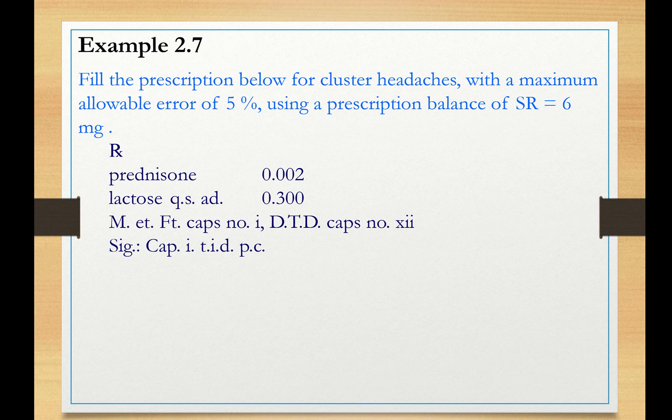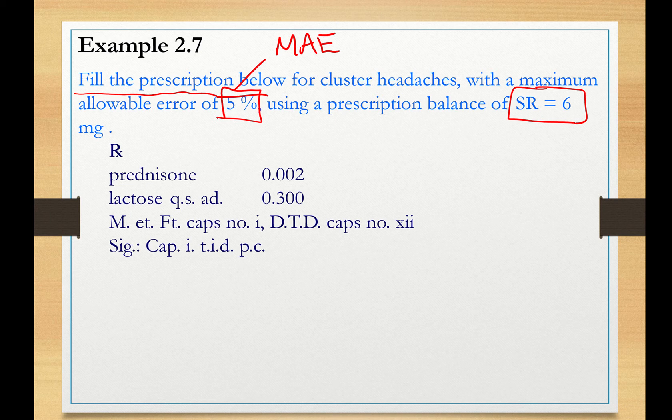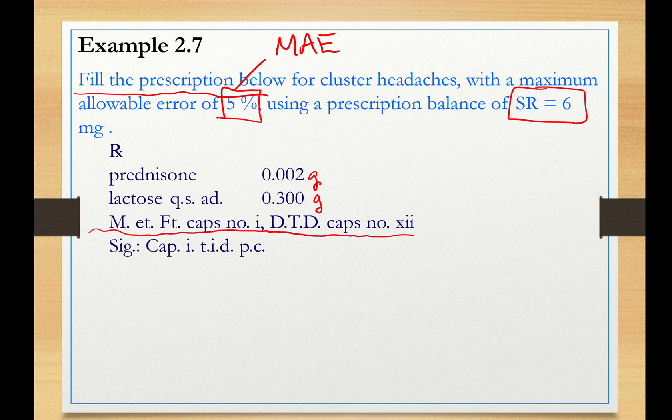Let's describe the method using an example. That's easier having numbers, a real example. Fill the prescription below for cluster headaches with a maximum allowable error of 5%. You need to fill this prescription with a maximum allowable error of 5%. And the balance you are using to weigh these ingredients, prednisone and lactose, is of SR equal to 6 milligrams. Now prednisone here is 0.002 grams and lactose Q is add to 0.3 grams. The first task here is to understand M and Ft caps number 1, Dtt caps number XII and the sigma here. We have to make sure we read and understand the directions here.